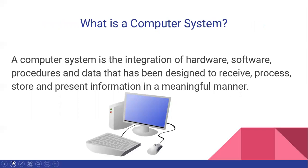Now, what is a computer system? A computer system is the integration of hardware, software, procedures, and data that has been designed to receive, process, store, and present information in a meaningful manner. Therefore, a computer system is a collection of entities that is designed to input, process, store, and output information.